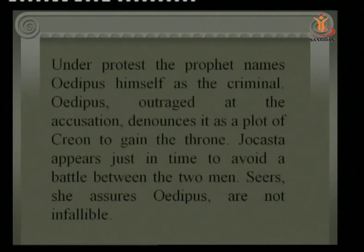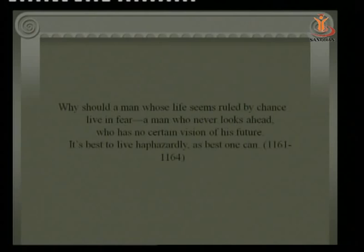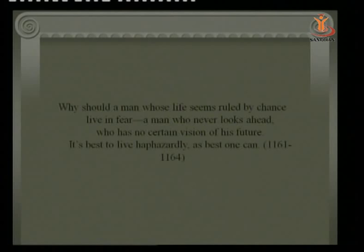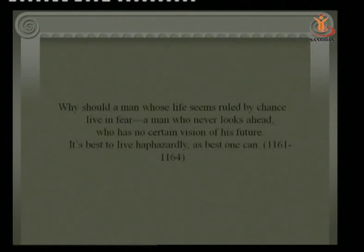Jocasta appears just in time to prevent a confrontation. She assures Oedipus that such prophecies are not infallible, saying: 'Why should a man who lives life seemingly ruled by chance, live in fear? A man who has no certain vision of his future — it's best to live as best one can.' She urges him not to believe in prophecies and to live according to his own will.